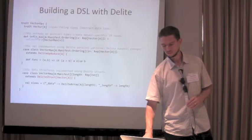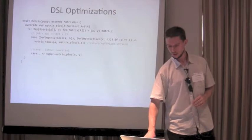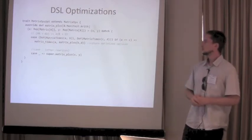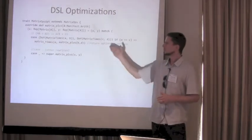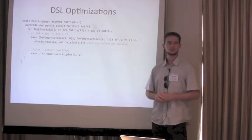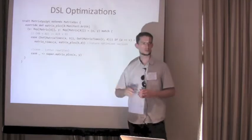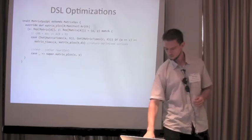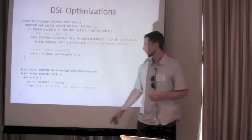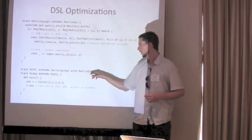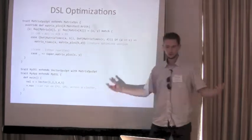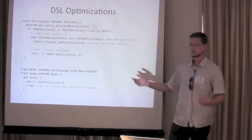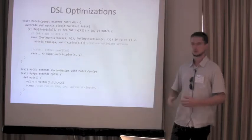We can also add optimizations: given a Matrix trait similar to vectors, we override the matrix plus operation and add pattern matching. If there are two matrix-times operations, we can apply the distributive law and perform a rewrite; otherwise, fall back to default. We use the host language to do smart constructors and rewrites while constructing the IR. The user program then just says 'myDSL extends VectorTrait with MatrixTrait' and 'myApp extends myDSL', mixing in all traits, and can create a vector and call max — which, because it's a DelightReduce, can run on GPUs, CPUs, or across a cluster.